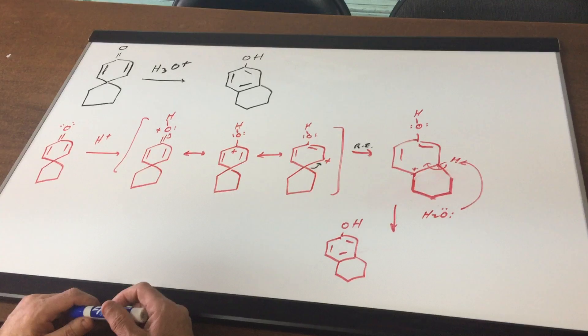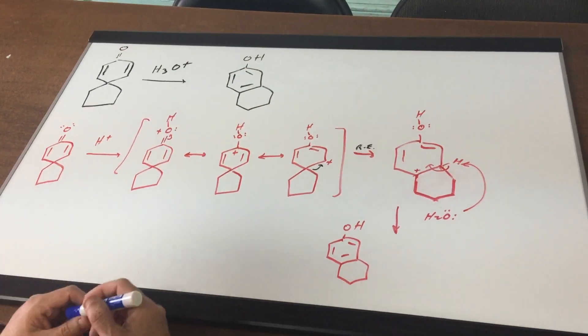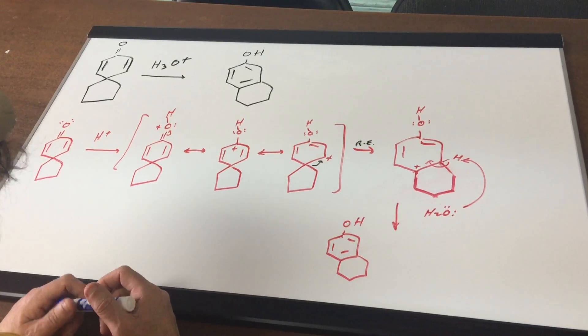Now we want to make sure for the DAT we understand what a phenol is. A phenol means that you have a benzene ring and there's an alcohol group on it.